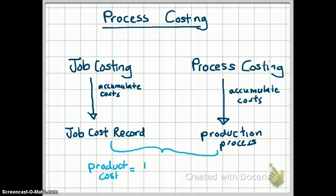It does not matter which method your company uses — the product cost is always the sum of direct material, which is traced, direct labor, which is also traced, and manufacturing overhead, which is allocated to the product using your predetermined overhead rate multiplied by the actual amount of the allocation base used. You could allocate manufacturing overhead using a plant-wide rate, a departmental overhead rate, or an activity-based costing rate. The differences between the two methods are how they accumulate costs: job costing accumulates by the job cost record, and process costing accumulates by the production process.